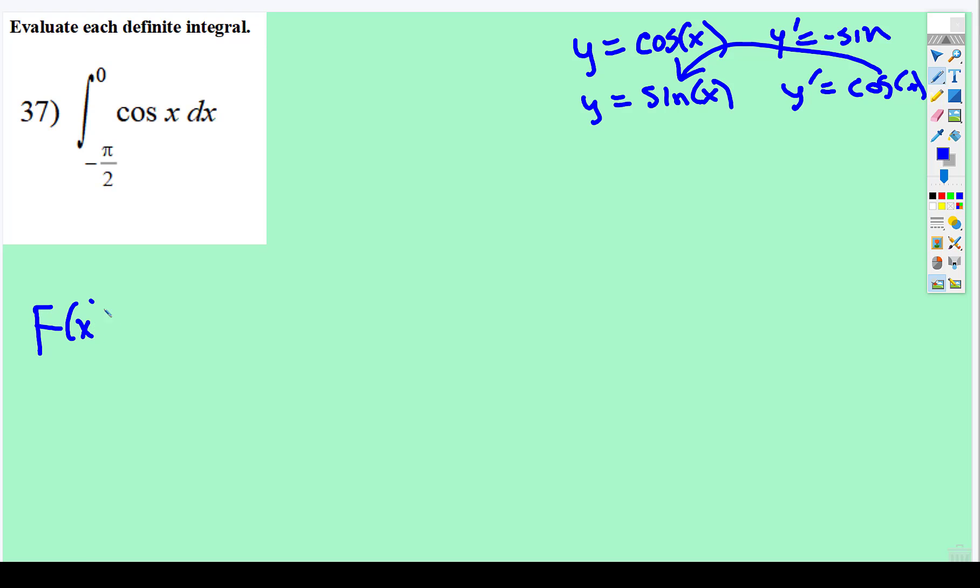So F(x) will equal sin(x), and we're going from negative π/2 to 0.